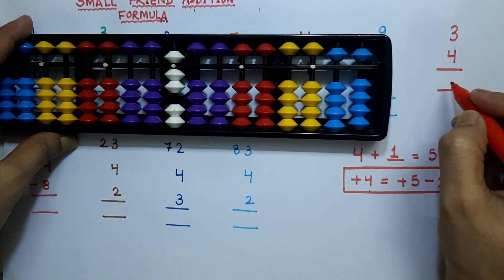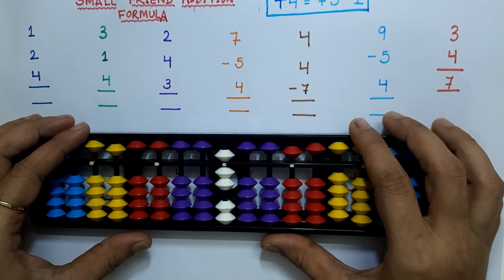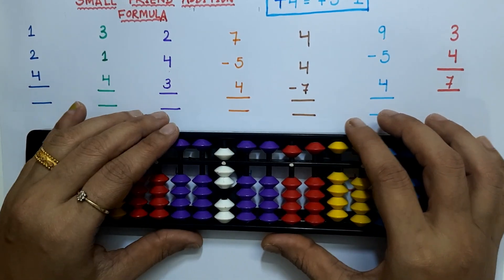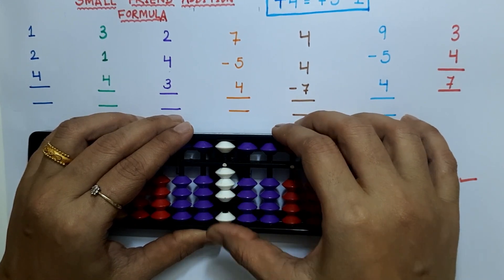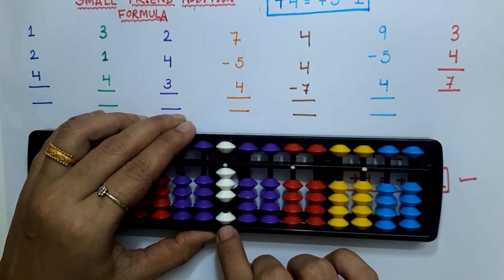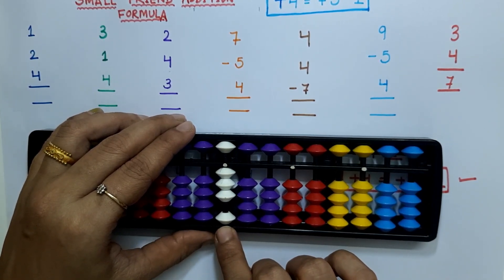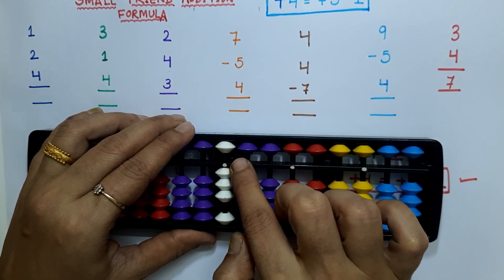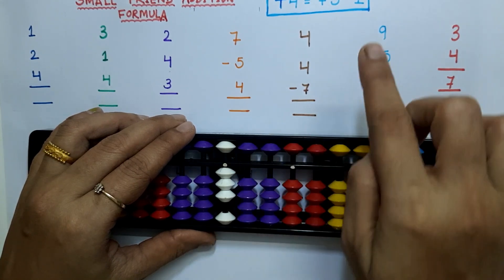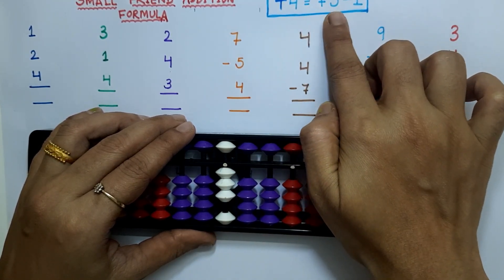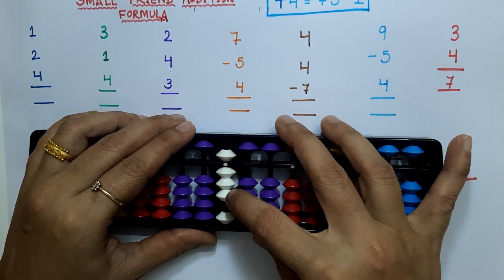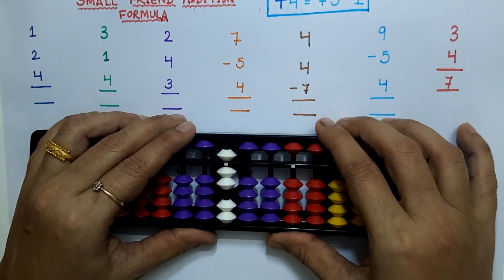Our first example is 1 plus 2 plus 4. For 1 plus 2, we need to add 4 bits, but we don't have 4 bits available at the lower deck. We have the upper bits available, so we apply the formula: plus 4 equals plus 5 minus 1. The answer here is 7.